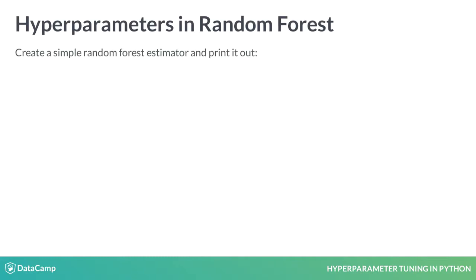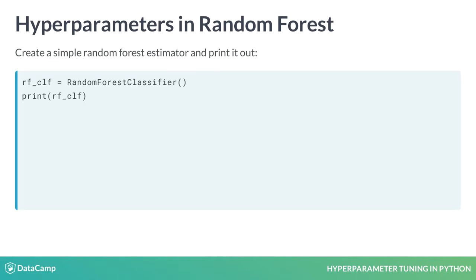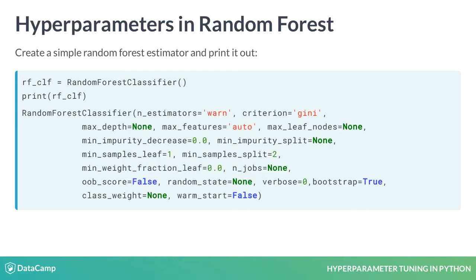We can easily see the hyperparameters by creating an instance of the estimator and printing it out. Here we create the estimator with default settings and call the print function on our estimator. Those are all our different knobs and dials we can set for our model — there are a lot.